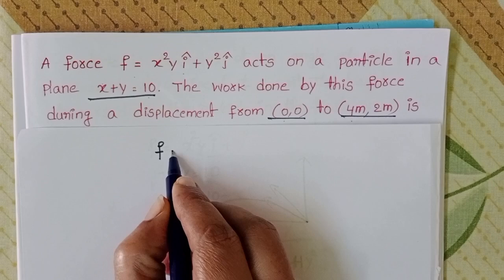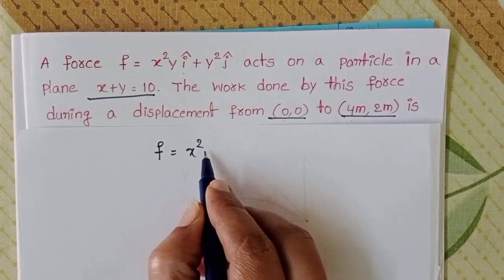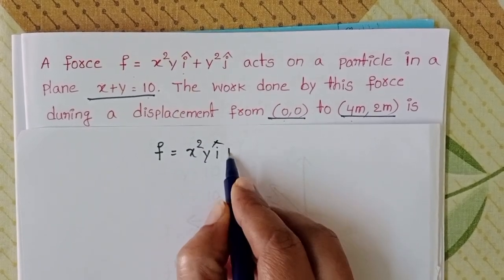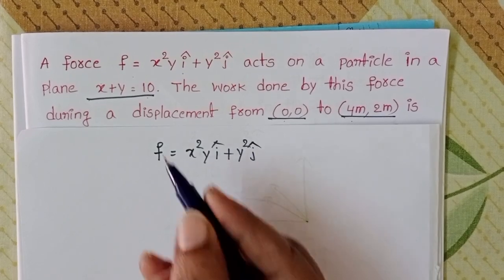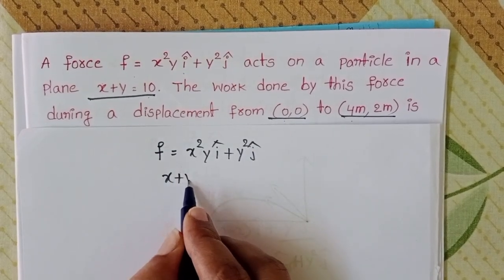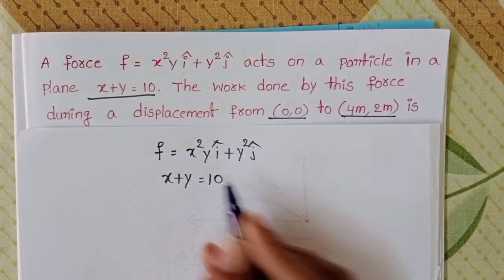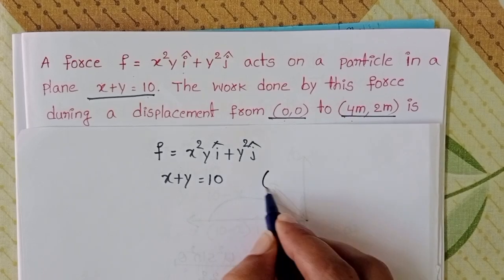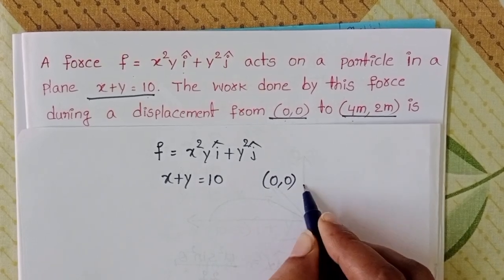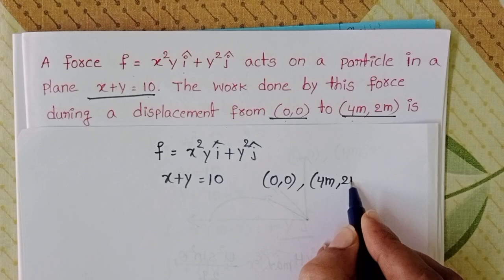In this question we know force F equals x² y î plus y² ĵ and also we know x plus y equals 10. The displacement of the particle is from (0,0) to (4m, 2m).